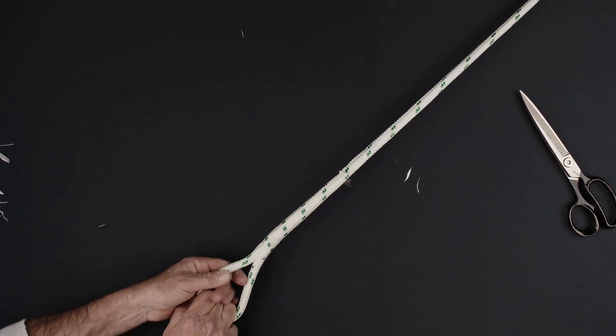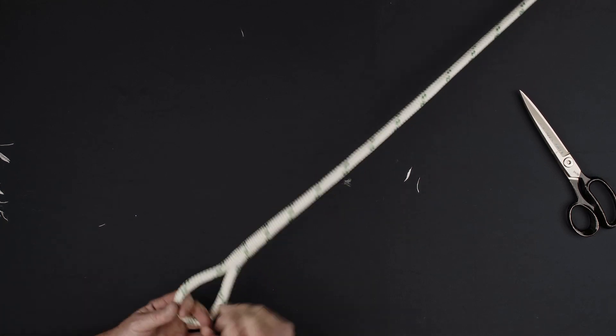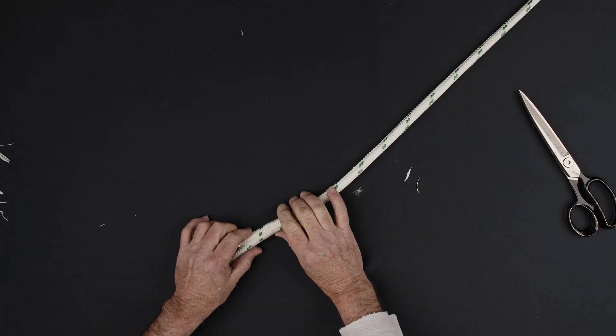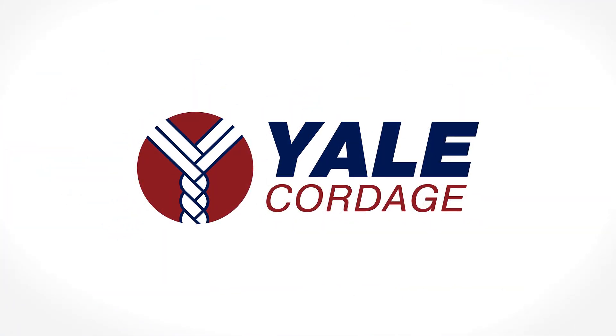The splice is complete when the first and second eye mark are aligned and a whipping is performed one inch from the base of the eye. Refer to the Whiplock instructions at the end of the industrial single braid eye splice video.